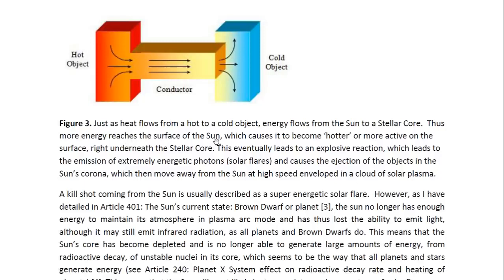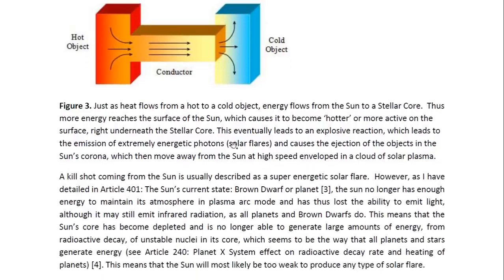Thus more energy reaches the surface of the sun — this would be the core of the sun. Because of the contact, more heat flows out, so the surface of the sun becomes hotter or more active and the electric field at this point increases. This point would be right underneath the stellar core. This eventually leads to an explosive reaction, which leads to the emission of extremely energetic photons — in other words, it leads to a solar flare and causes the ejection of the objects in the sun's corona, which then move away from the sun at high speed enveloped in a cloud of solar plasma.